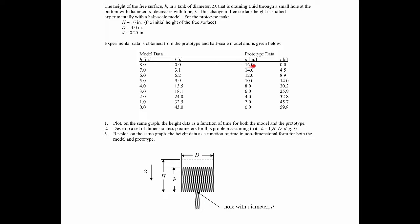Notice that at the starting point it's 16 inches in the prototype, just like specified. The model, since it's half scale, starts at 8 inches. The first task is to plot on the same graph the height data as a function of time for both model and prototype. Then we do a dimensional analysis given that height is a function of initial height, container diameter, hole diameter, gravity, and time. Finally, we re-plot the height data as a function of time in dimensionless form.